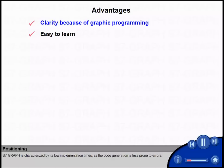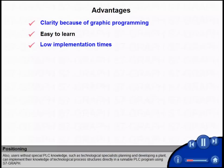S7-GRAPH is characterized by its low implementation times, as the code generation is less prone to errors. Also, users without special PLC knowledge, such as technological specialists planning and developing a plant, can implement their knowledge of technological process structures directly in a runnable PLC program using S7-GRAPH.